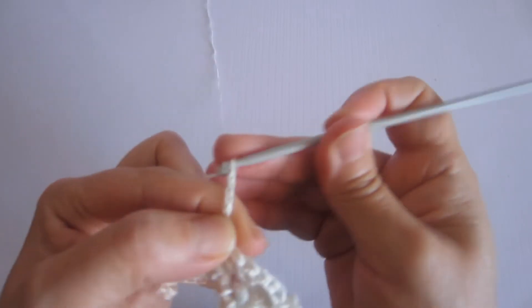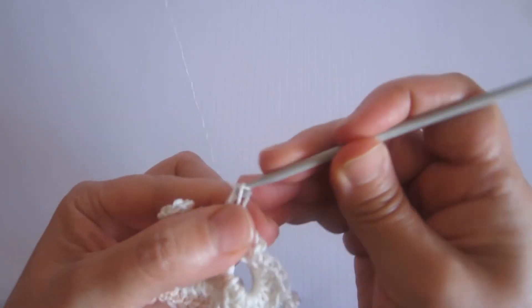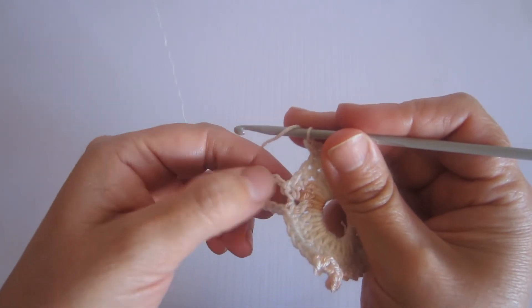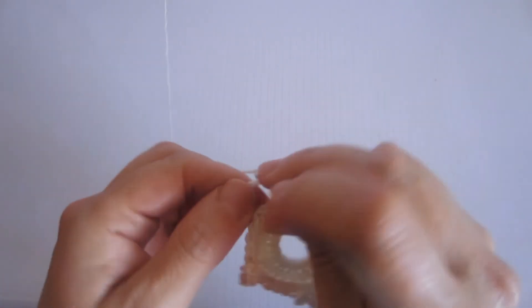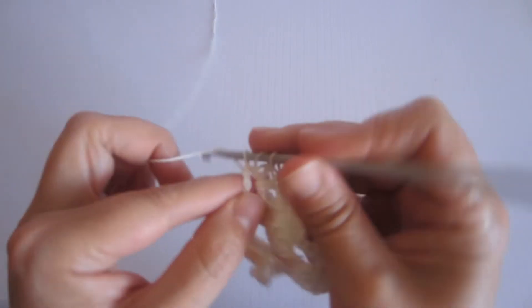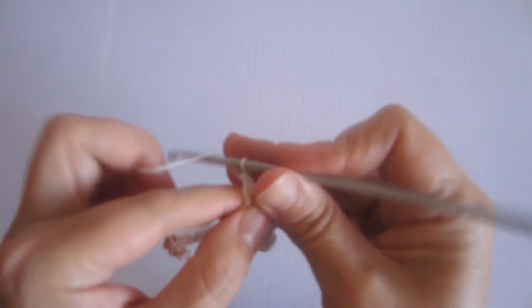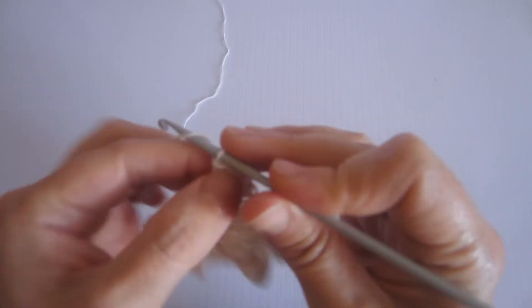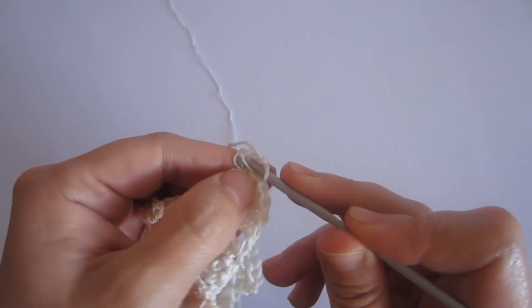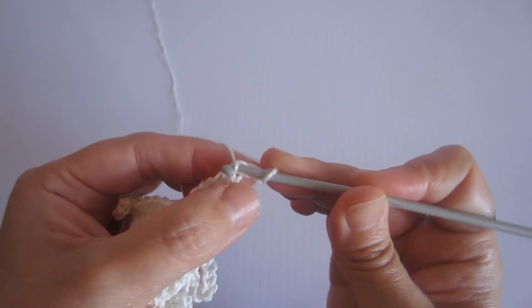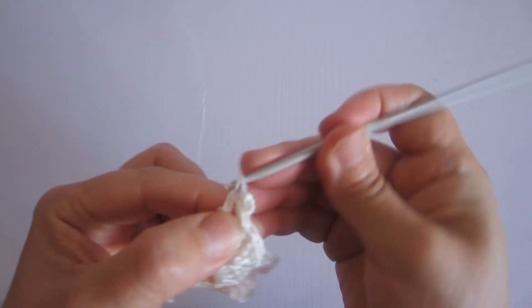Y ahora voy a contar 1, 2 y en el tercero tejo medio punto, 7 cadenitas. En el mismo espacio medio punto. Ahora paso directamente al siguiente espacio tejiendo 6 puntos altos.